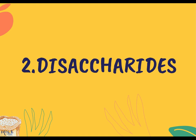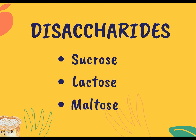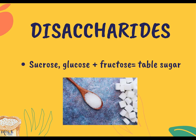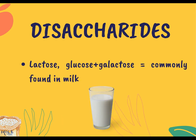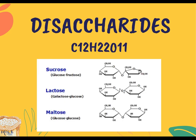The second classification of carbohydrates is disaccharides. It consists of two monosaccharide molecules that are chemically combined. There are three disaccharides that are separately important from the biological point of view. The first is sucrose, which is a combination of glucose and fructose, known as table sugar. Another kind is lactose, a combination of glucose and galactose commonly found in milk. Maltose is a combination of glucose and glucose, found in sprouting grain. These are the structural organizations of disaccharides: sucrose, lactose, and maltose.